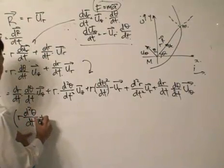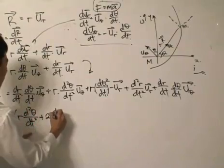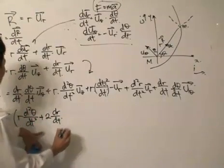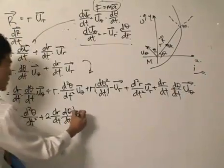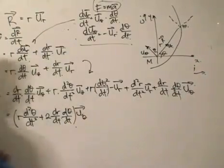Then I'll plus a 2 dR/dt dot with a dθ/dt. I'm just grouping the U_theta together U_theta like that.